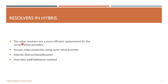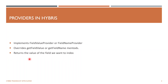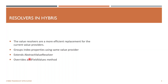Value resolvers are similar to providers but are a more efficient replacement. They group index properties that use the same value provider, resolving values together and sending them to Solr. A resolver extends the AbstractValueResolver class, which has the interface implemented internally, and we override the addFieldsValue method.